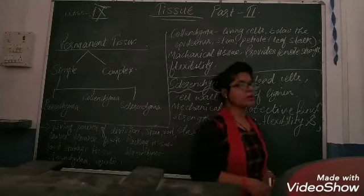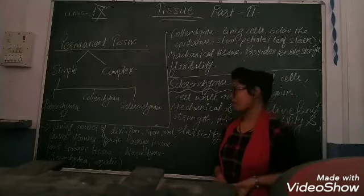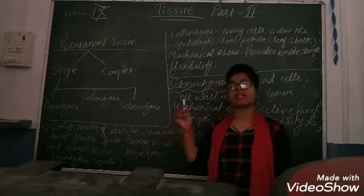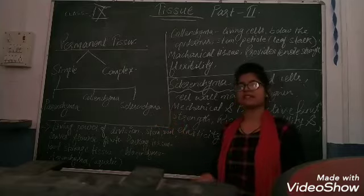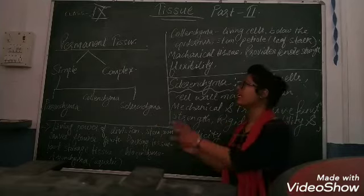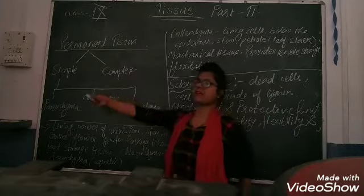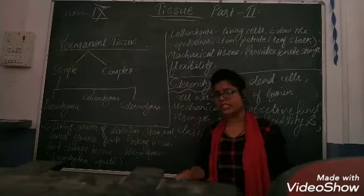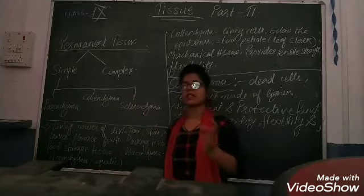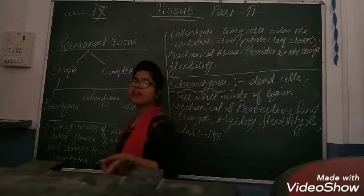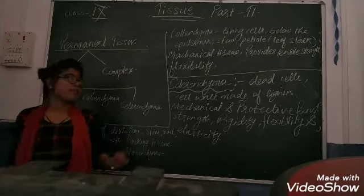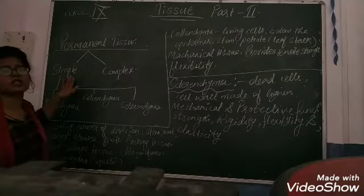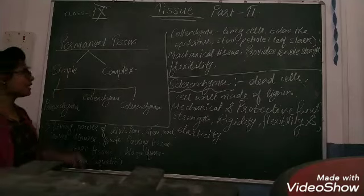First of all, you will learn about the meristematic tissue. But now we have to move to permanent tissue, because we have divided them into two parts: simple and complex. We will use simple tissue, and under meristematic tissue we have intercalary and apical meristems. Here we have to use simple permanent tissue.